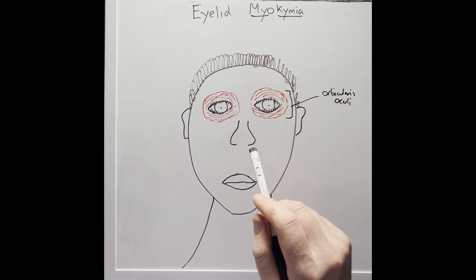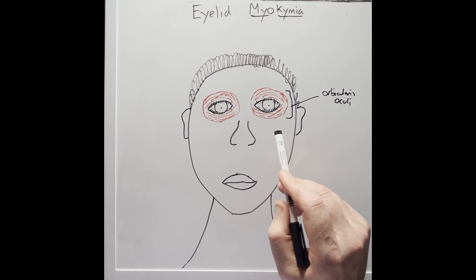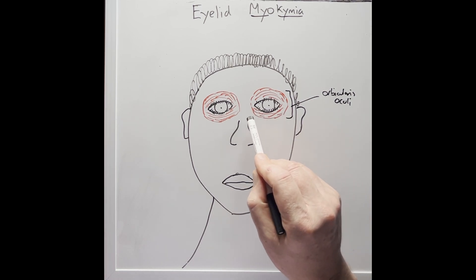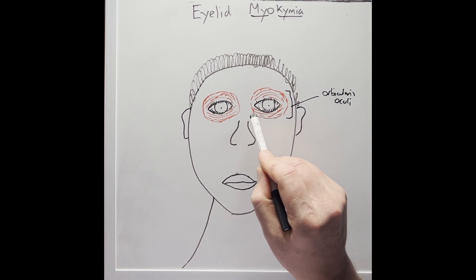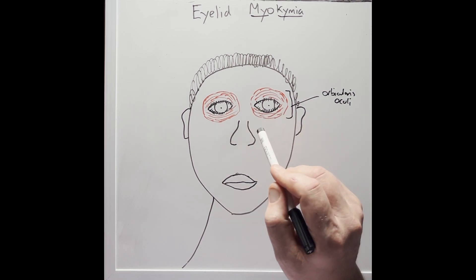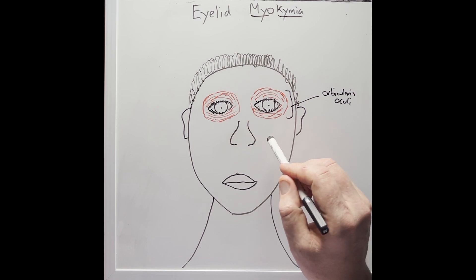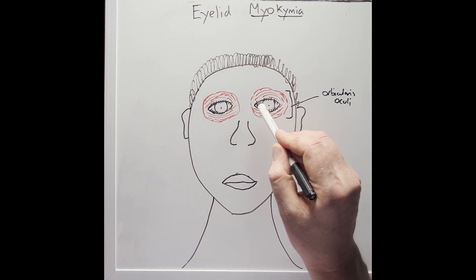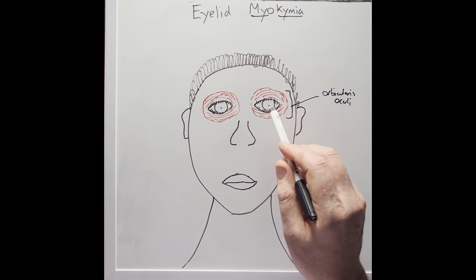One eye is usually affected at a time, most commonly affecting the lower eyelid. This is due to the muscle itself rather than the facial nerve that supplies the muscles.